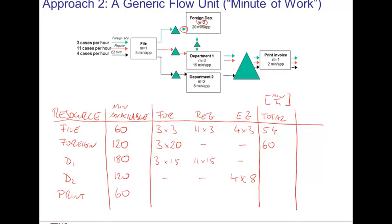In department two, we have only the work from the easy cases, of which there are 4 units an hour, times 8 minutes per unit. Finally, everybody shows up in printing, creating a workload of 3 times 2 minutes for the foreign cases, 11 times 2 minutes for the regular cases, and 4 times 2 units for the easy cases. If we total these various rows, we see that the workload in department one is 210 minutes, 32 minutes in department two, and 36 minutes in the printing department.